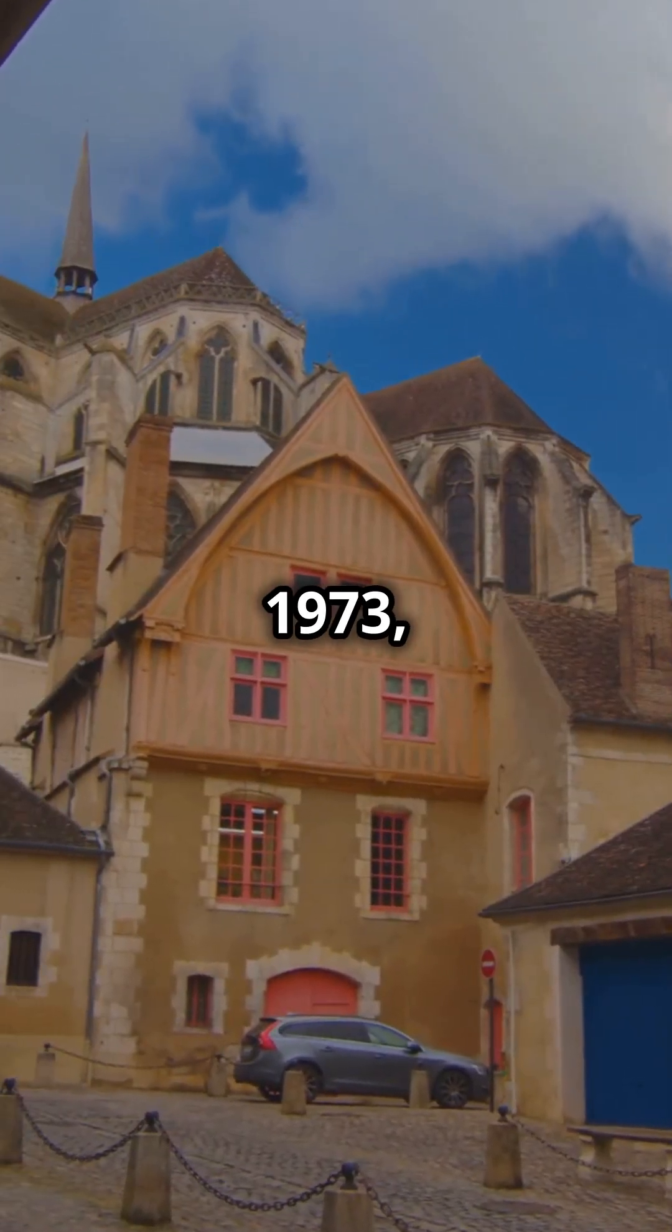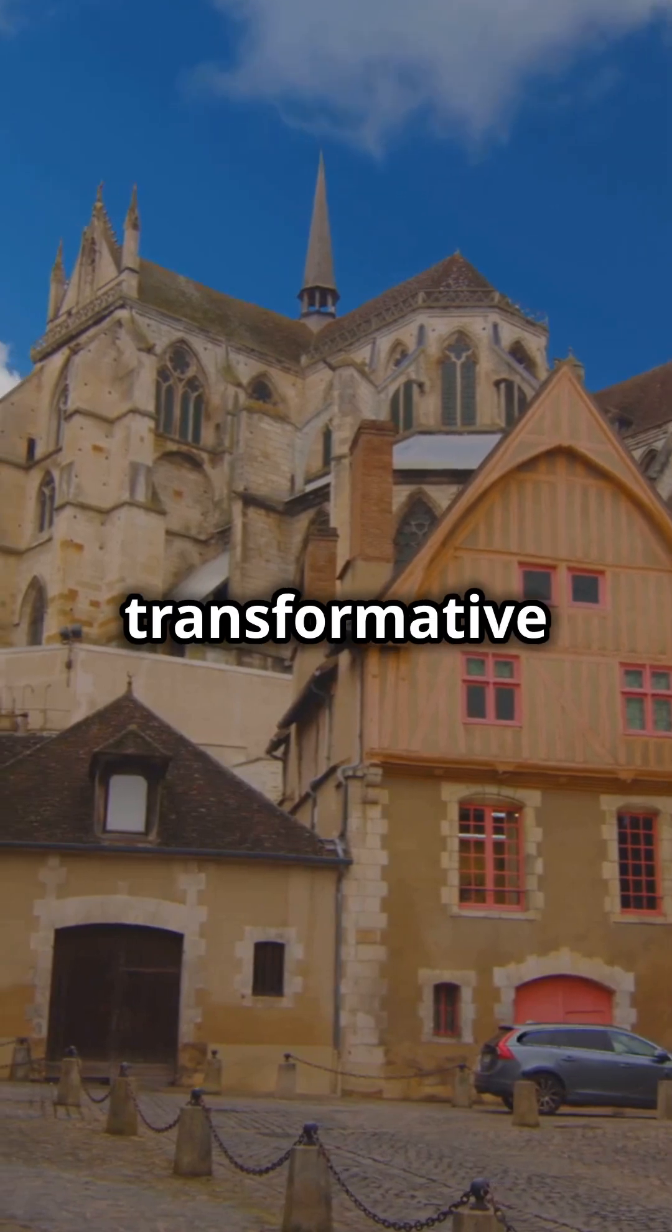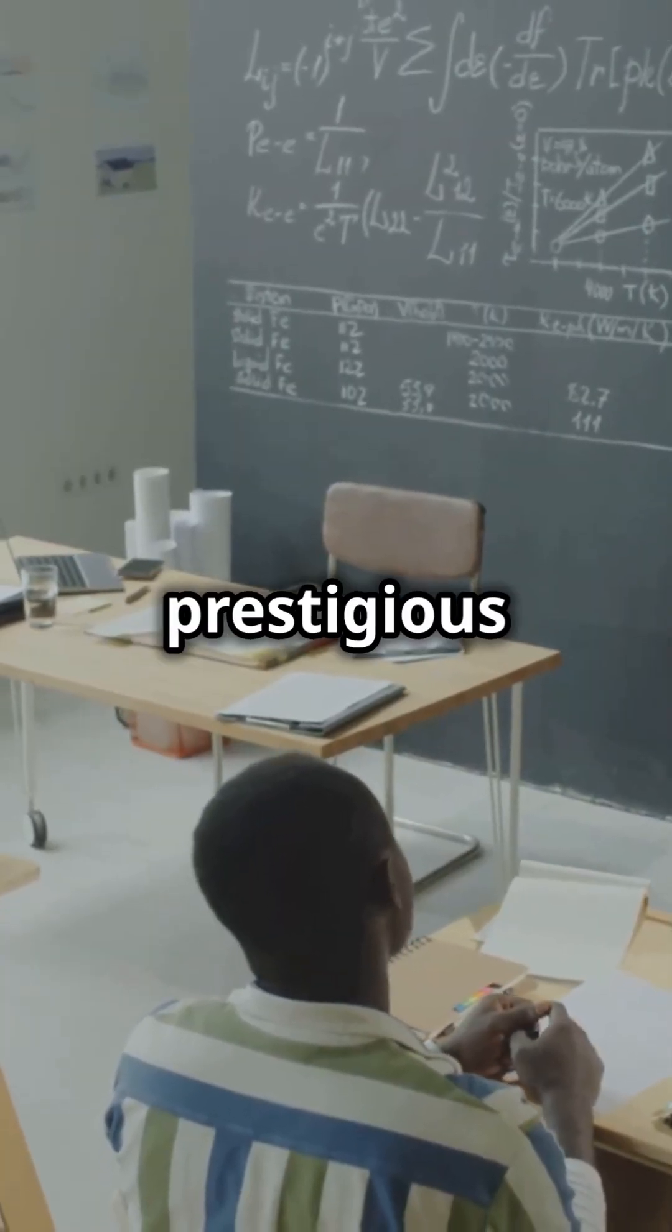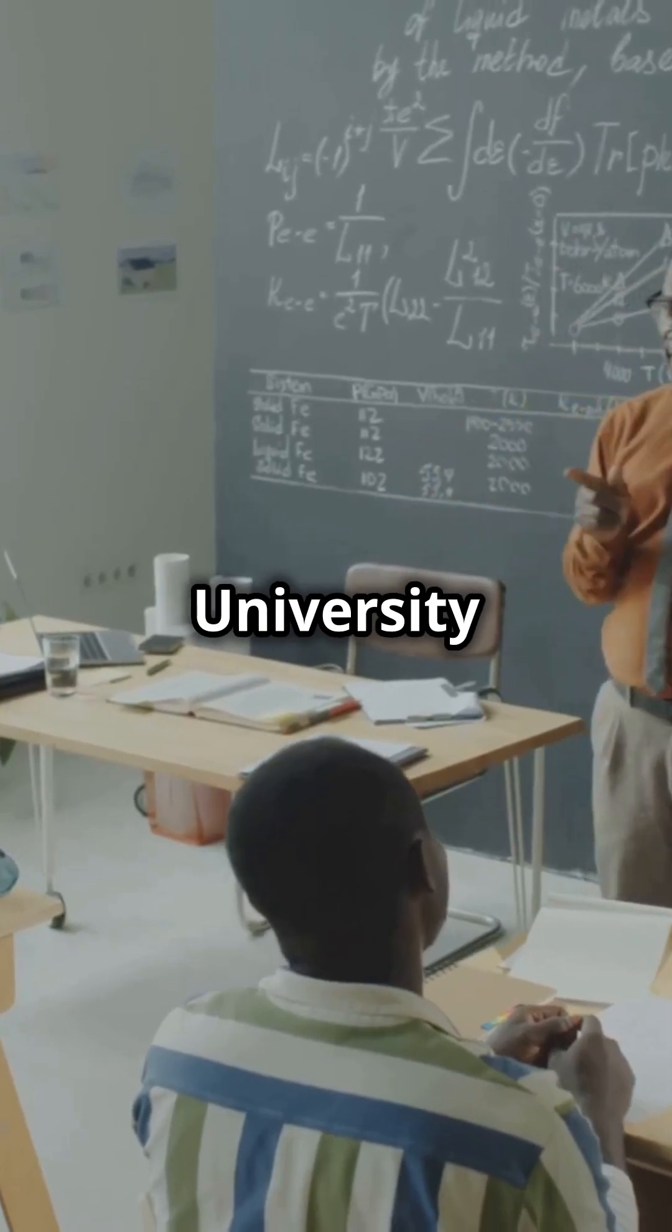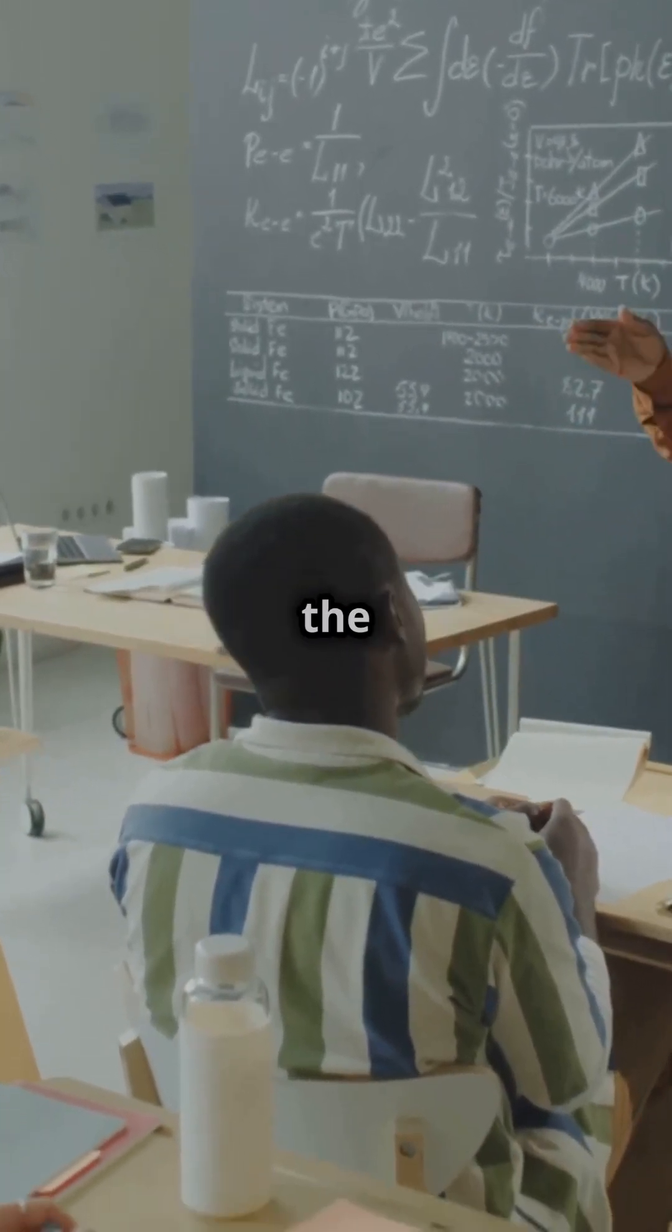Born on October 5, 1973, in Brive-la-Gaillarde, France, Villani has been a transformative figure in mathematics. He pursued his education at the prestigious École Normale Supérieure and University Paris-Dauphine, where he began to make significant contributions to the field.